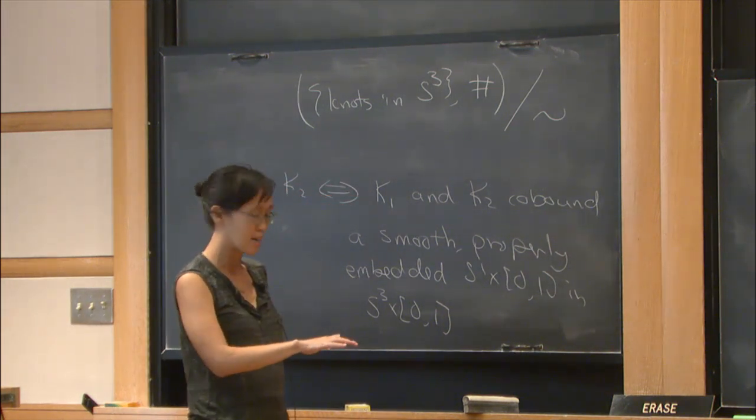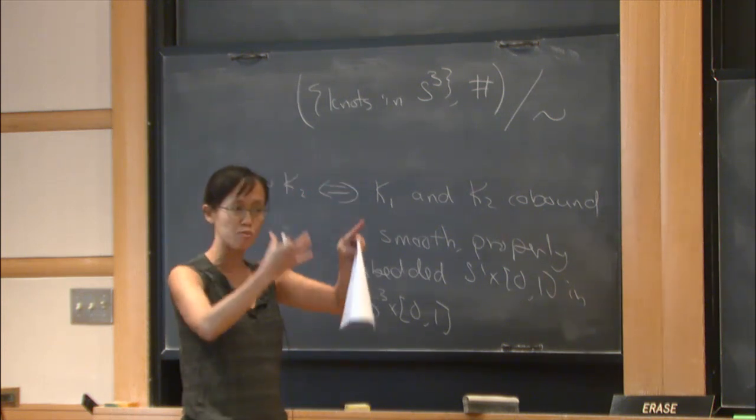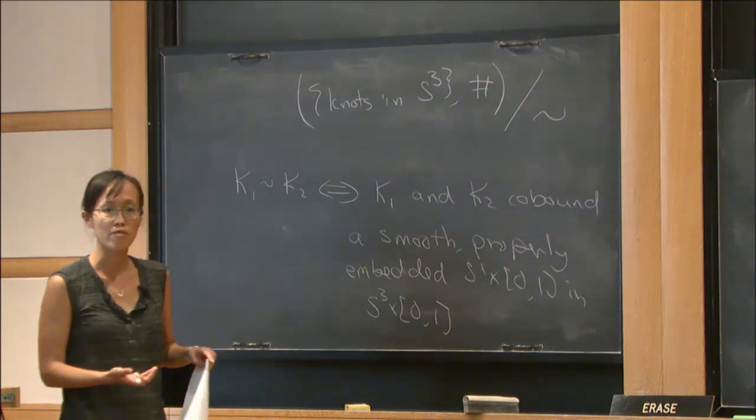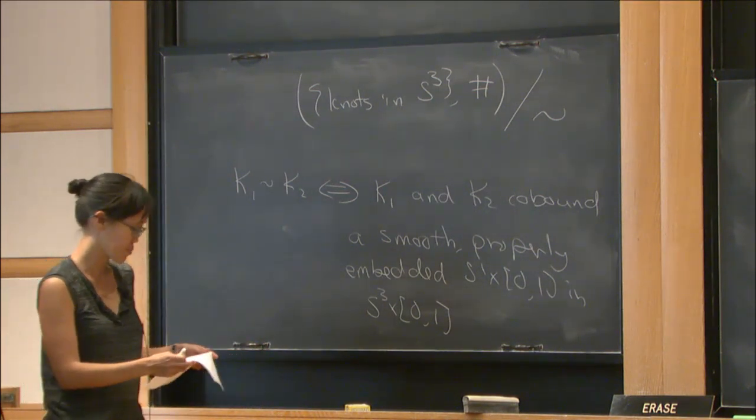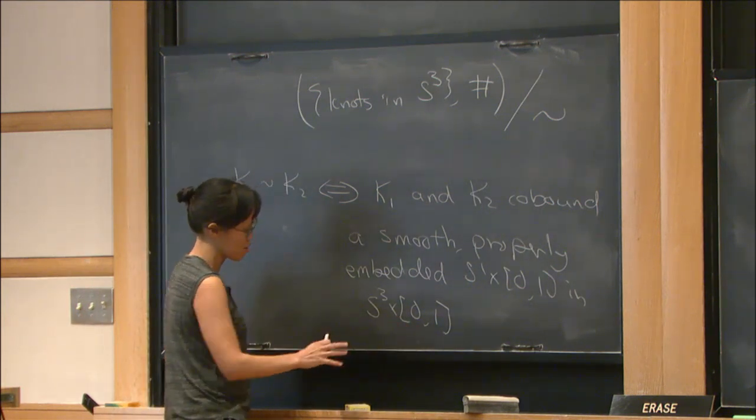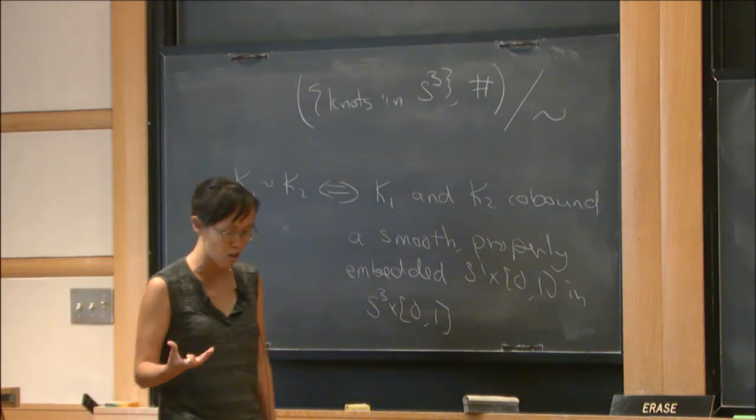Such that on one end, the boundary of your cylinder is K₁, and on the other end, the boundary of your cylinder is K₂. This is happening in S³ × I, which is a four-manifold, so maybe this is a little hard to see.